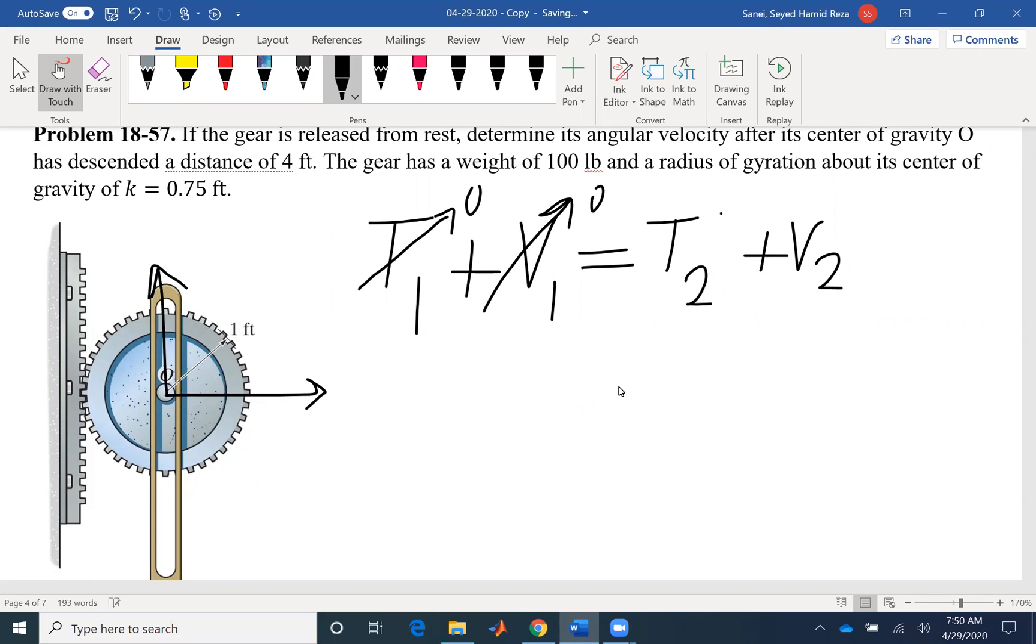So all I have would be the final kinetic energy and the final potential energy. I'm gaining kinetic energy and I'm losing potential energy. So my potential energy would go negative. So my kinetic energy could become positive. This gear is losing height to gain speed.